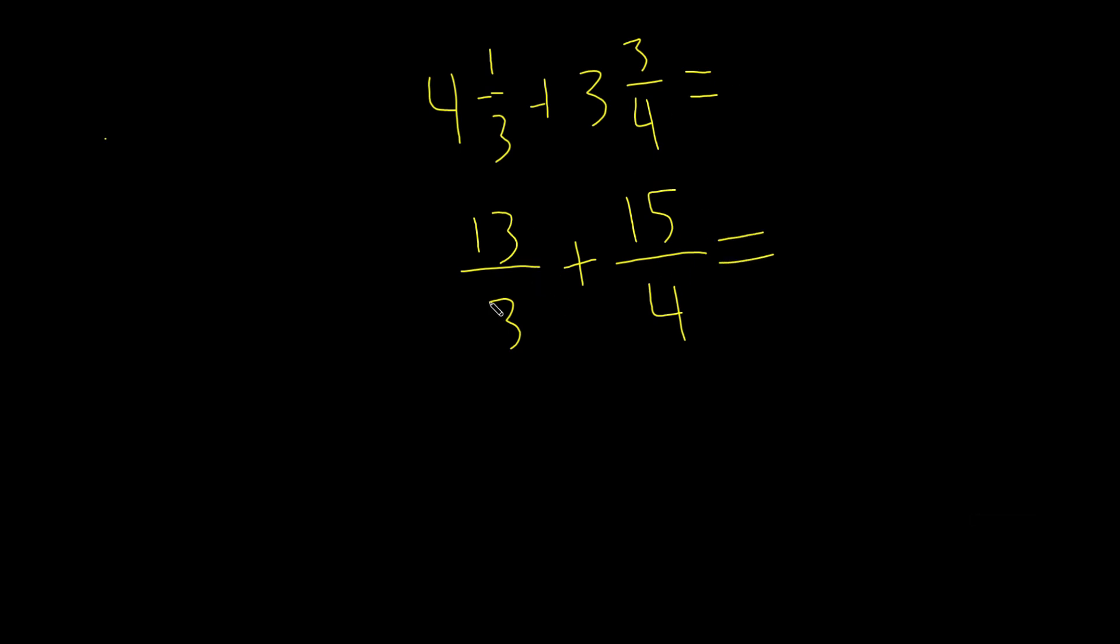And this is equal to, well, let's add these two. 3 times 4 is 12. Over, 13 times 4, that's a little tricky, that's 52, plus 15 times 3, that's also pretty tricky, that's 45. And now we're going to add these two. 52 plus 45, that's 97. So our answer in improper fraction form is 97 over 12, and that's our answer.